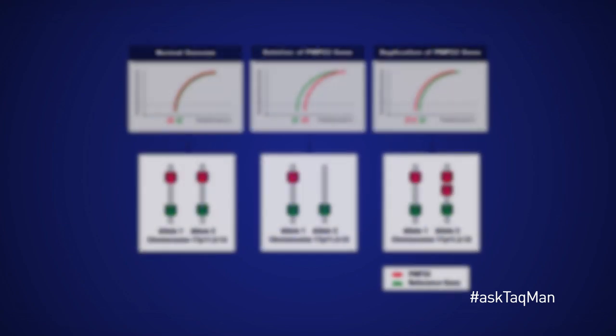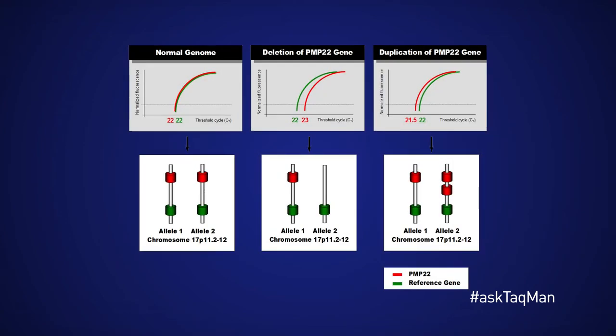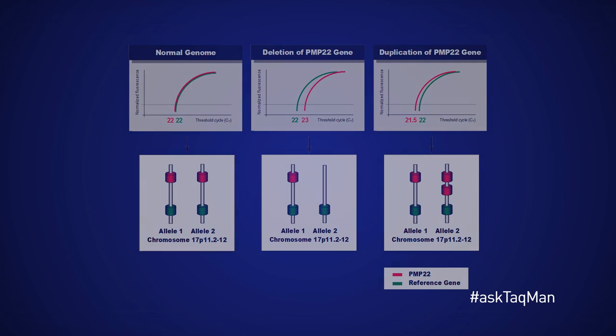Copy number studies on genomic DNA targets are quite important to any number of labs, who typically need to either segregate animals with different copy numbers of a transgene, or to detect and quantify duplication or deletion events associated with a particular phenotype.